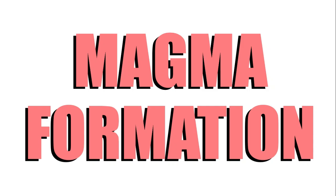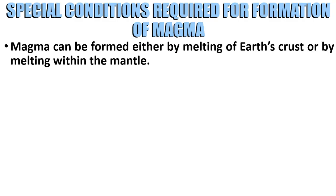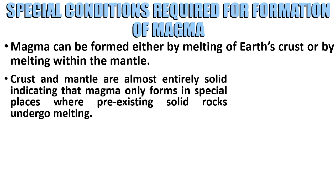In this video, we're going to talk about magma formation. What are the conditions required for formation of magma? Magma can be formed either by melting of the crust or by melting within the mantle. The crust and mantle are almost entirely solid, indicating that magma only forms in special places where pre-existing solid rocks undergo melting.